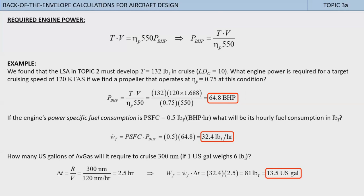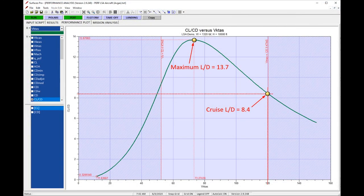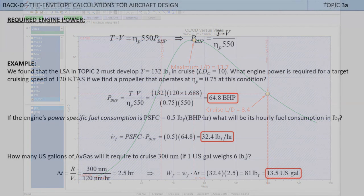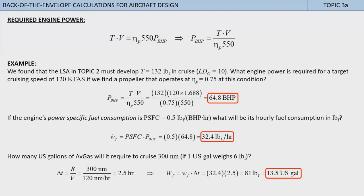The student of aircraft design should be able to start experimenting with this process and ask questions like, what happens if the aircraft is only capable of delivering an LDc of, say, 8? A value of 8 is a lot closer to what typical LSA actually deliver. This would be a consequence of a draggier airplane than imagined at first. So, let's quickly evaluate this. If the airplane only delivers an LDc of 8, the power required to cruise at 120 kTAS will be 81 rather than 65 brake horsepower. The fuel flow will be 40.5 rather than 32.4 pounds per hour. And a 300 nautical mile cruise range will require 16.9 rather than 13.5 U.S. gallons of avgas, all increased by 25%.